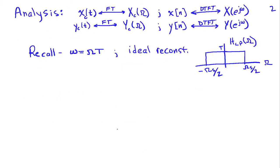To analyze this problem, we first write down a few facts. The Fourier transform of xc(t) is Xc(Ω), and the Fourier transform of the continuous-time output yc(t) is Yc(Ω). Similarly, the discrete-time signals x(n) and y(n) have discrete-time Fourier transforms X(e^jω) and Y(e^jω).